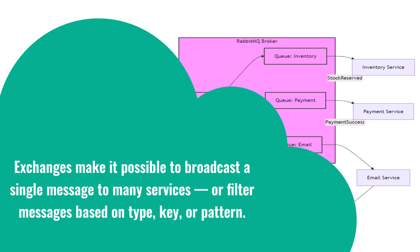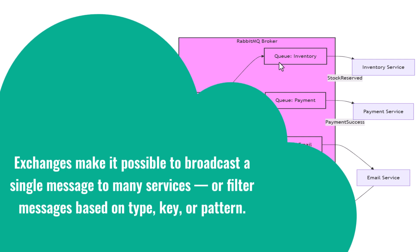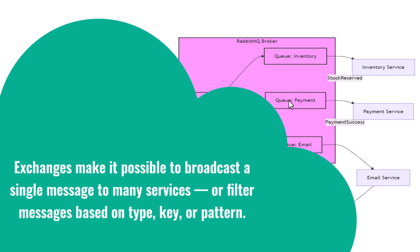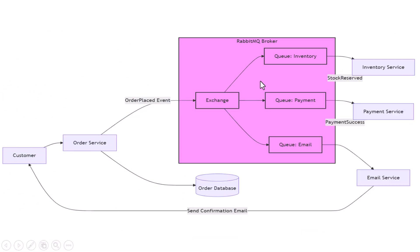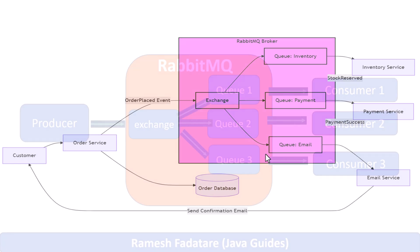This is the real power of RabbitMQ with exchanges. Exchanges make it possible to broadcast a single message to many services, or filter messages based on type, key, or pattern. Your order service doesn't need to know who needs the message — it just sends it to the exchange, and RabbitMQ does the rest, routing it to the right queues, holding the message safely, and delivering it when each service is ready. You can even configure different exchange types like fanout, direct, or topic depending on how you want to route your messages. Want to add a new service like one that sends push notifications? Just bind another queue to the same exchange — no changes to the order service at all.